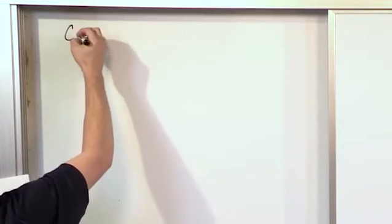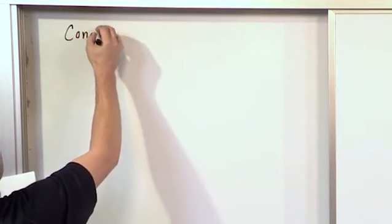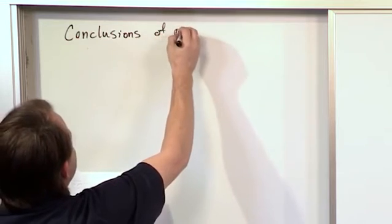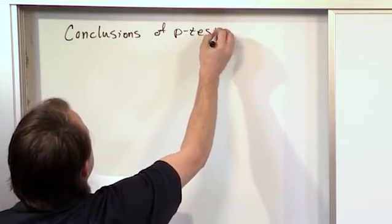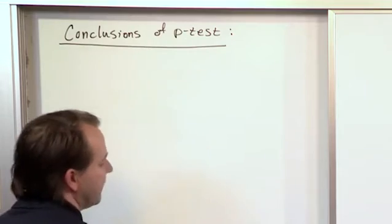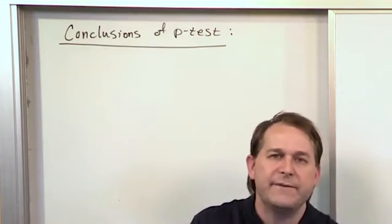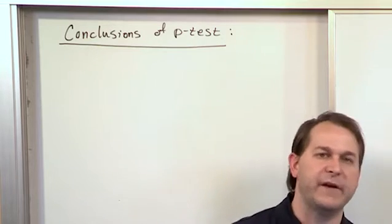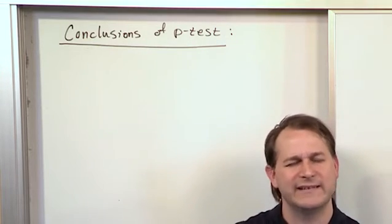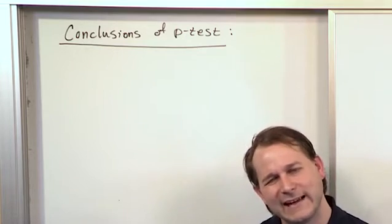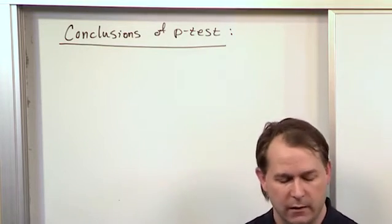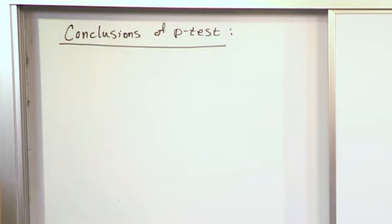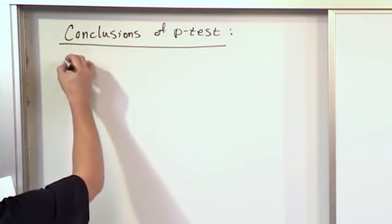So basically, here's how you use a p-value. I'm going to write the conclusions of the p-test. In other words, we told you at the beginning of the last couple of lessons that the p-value is still going to be used to tell you when you reject a hypothesis or fail to reject a hypothesis — it's doing the same job that we did before in a slightly different way. So we have criteria here to tell you when you reject the null hypothesis and when you don't, and they're very, very simple.